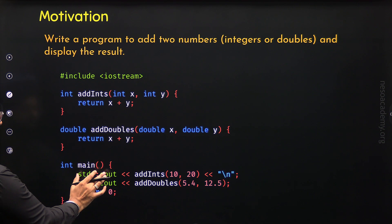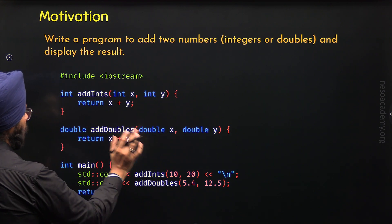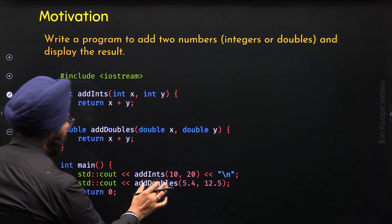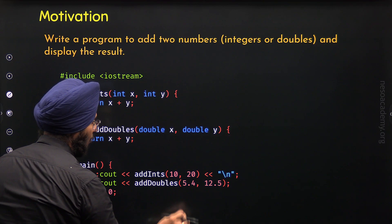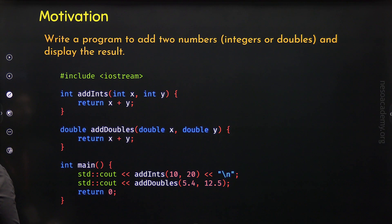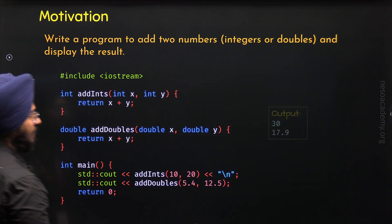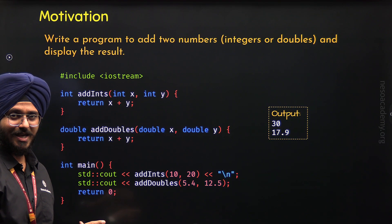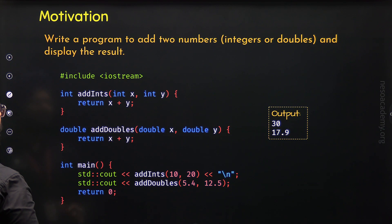Here we have the cout statement calling addInts with values 10 and 20 — from this call we get 30. Then we are calling addDoubles with values 5.4 and 12.5, and we get the result 17.9, which is the desired result. So when we execute this program, we will get the output 30 and 17.9. Our program is working as expected and we have found the solution.